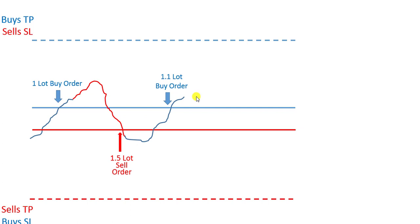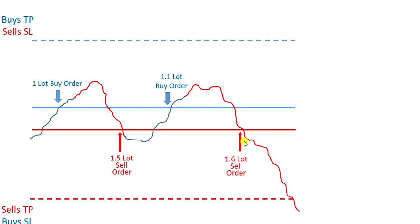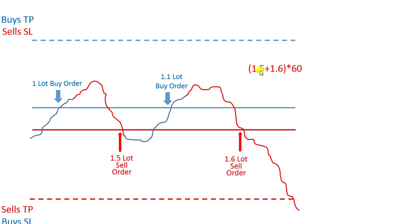Again, in the next iteration, if the price does not go in our favor and goes back to hit the sell line, we send another sell order with 1.6 lots. And when it continues in our favor, our profit would be 18 units.